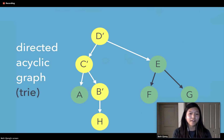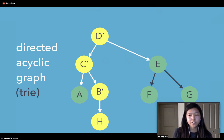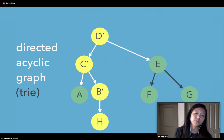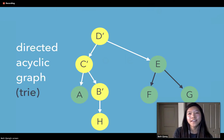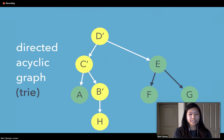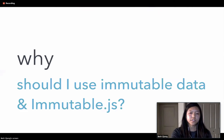Imagine you have 1,000 nodes instead of seven. If we were doing this manually, we'd have to clone every single one of those 1,000 nodes, which is not the most efficient thing. However, using structures like directed acyclic graphs, we reduce that work dramatically just by reusing those references.